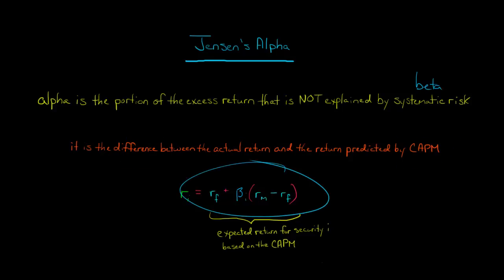I've got the capital asset pricing model here. We say that the expected return for security i or for portfolio p is equal to the risk-free rate of return plus the beta of the portfolio or the security times the market risk premium, which is just the expected rate of return for the market minus the risk-free rate.